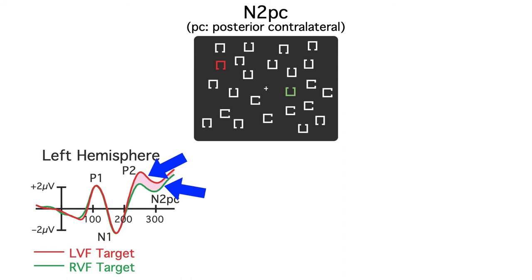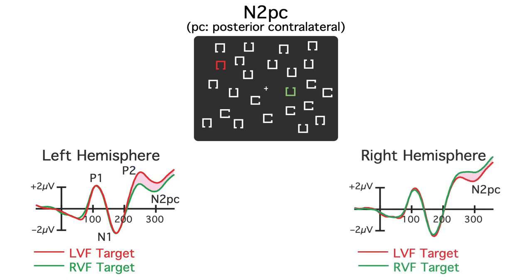The N2PC is added onto all the other ERP components that are active during this time period, so the overall voltage during this period is actually positive. The N2PC is a negative deflection that's added onto this positive voltage. If we look at the right hemisphere, we see the complementary pattern. Now the voltage is more negative for a left visual field target than for a right visual field target.